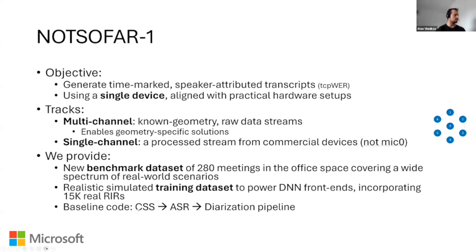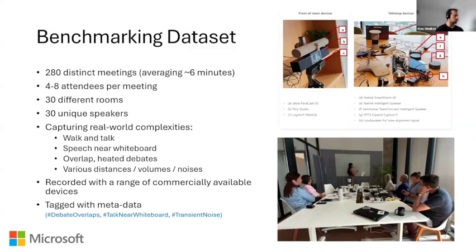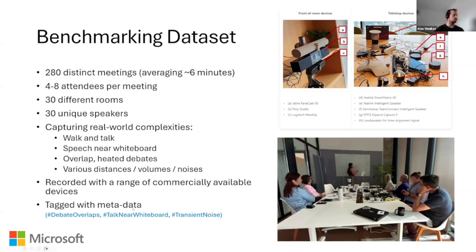We also have a baseline system going from separation to ASR and then diarization. The benchmark dataset has almost 300 relatively short meetings — we want each meeting to be different. We have up to eight attendees per meeting, 30 different meeting rooms, and 30 unique speakers. This dataset is designed to fully evaluate ASR systems, covering many settings like people walking and talking, speech near a whiteboard, overlapping speech, varying distances and noises. The system must be robust to all of this. We actually annotate these acoustic events with hashtags in the ground truth, so you can perform analysis of how your system does per condition.